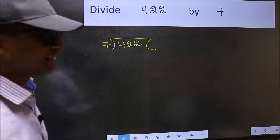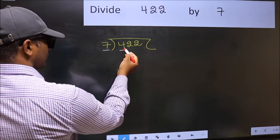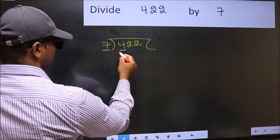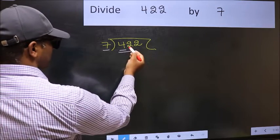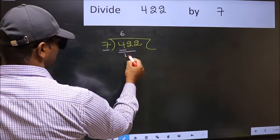Next, here we have 4 and here 7. 4 is smaller than 7. So we should take two numbers, 42. When do we get 42 in 7 table? 7, 6, 42.